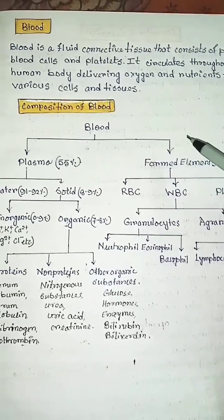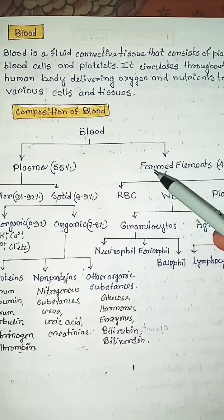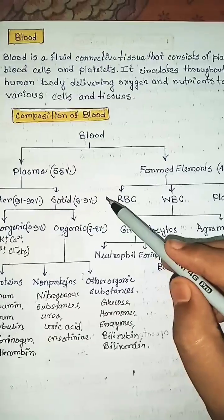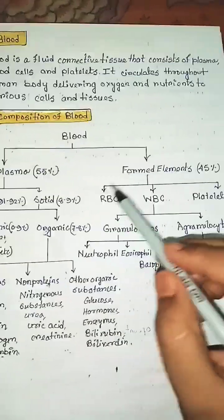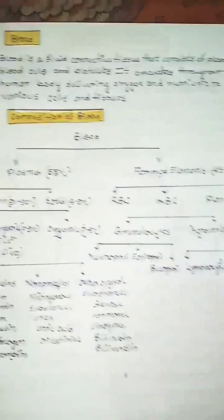Composition of blood. Blood contains mainly two components: plasma and formed elements. Plasma makes up 55% and formed elements make up 45%.